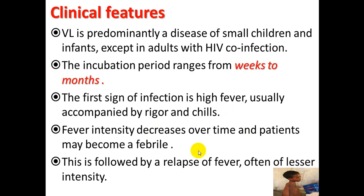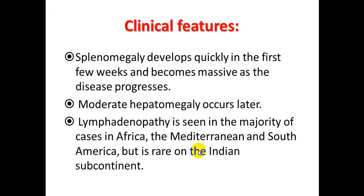There is organomegaly. Splenomegaly is at the top of the list, appearing quickly in the first week and becoming massive as the disease progresses. Moderate hepatomegaly also occurs. Lymphadenopathy is seen in the majority of patients in African, Lithuanian, and South American areas, but it is rare in India.